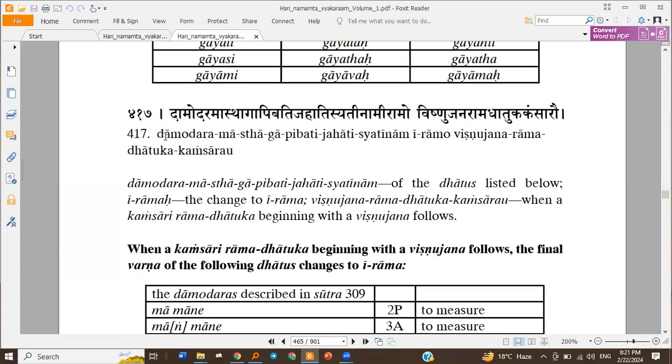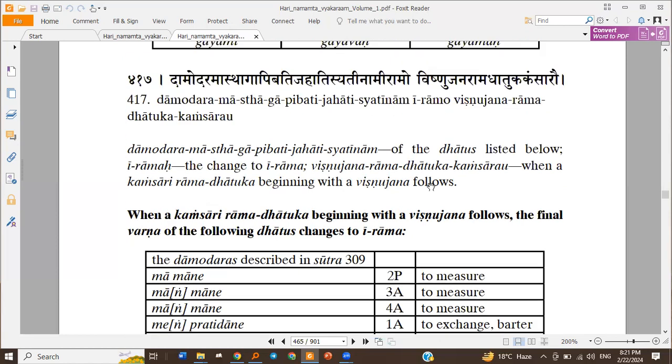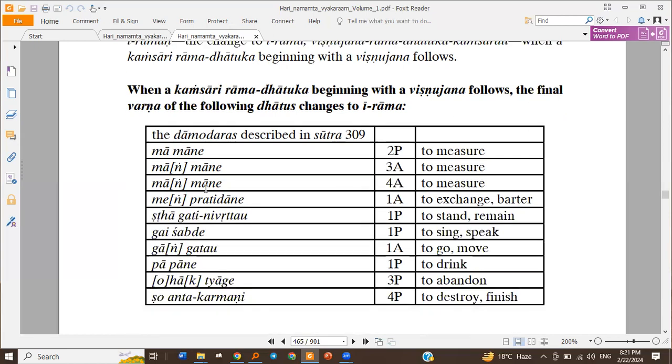Then Damodara Mastha Ga Pivati Jahati Siyatini Nami Ramo Vishnujana Ramadhatuka Kansaru - when a Kansari Ramadhatuka Pratyaya beginning with the Vishnujana follows, the final verna of the following Dhatu changes to E Rama. So all these Dhatus, their last final verna becomes Trivikrama E Rama when we have Kansari Ramadhatuka following beginning with the Vishnujana.